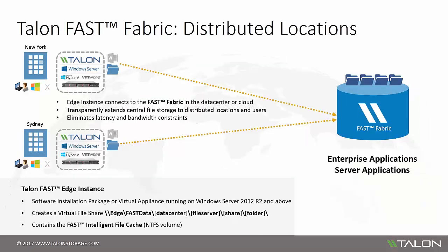One of the key parts of the Fast Fabric are the distributed locations — field offices, job sites, regional facilities, etc. These distributed locations have their own unique Fast Edge instance, which connects to the Fast Fabric in the data center or in the cloud. The Fast Edge transparently extends the central file storage to the distributed locations and users at those sites. Using the local Fast Intelligent File Cache and compression and streaming capabilities, Talon eliminates latency and bandwidth constraints common with distributed enterprises.